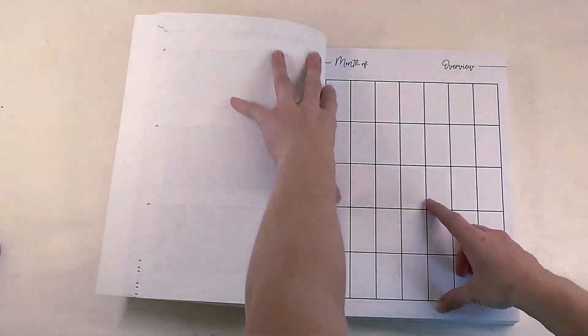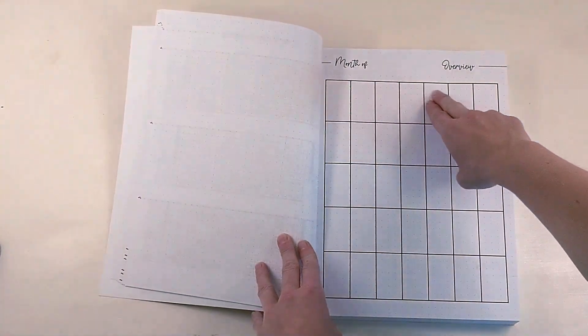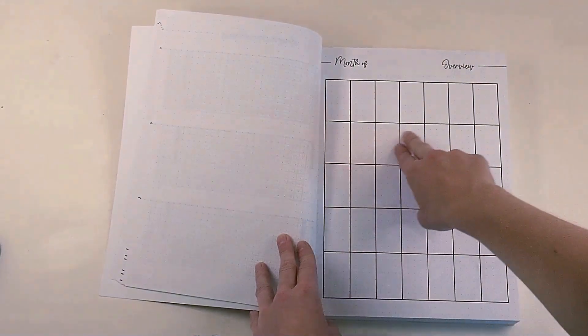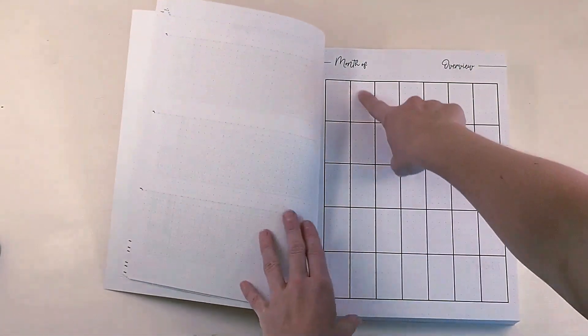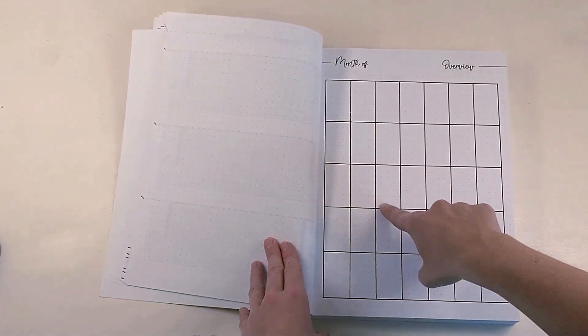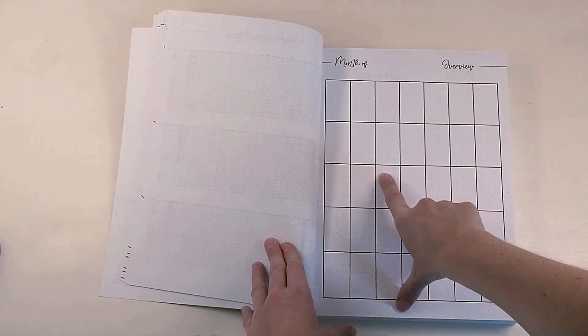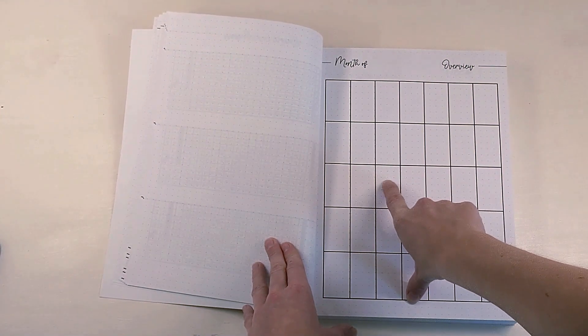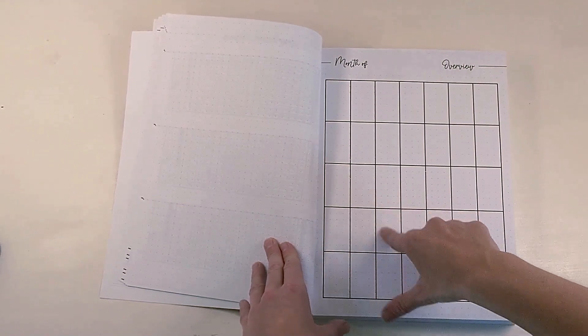So we have a note page and then a month overview page, and it's undated, so you can fill in the dates here. I personally would have preferred two full pages for this because this amount of space per day seems a bit small to me. But they did add these little dot grids to help you take advantage of that small space so you can write in those lines.